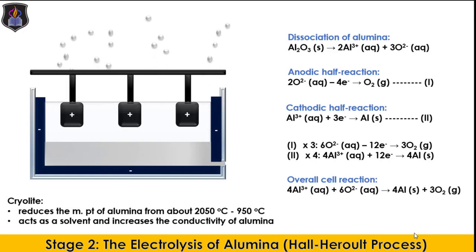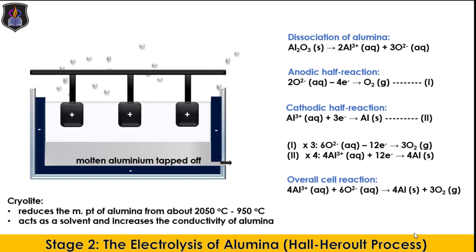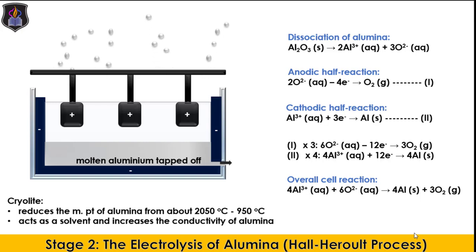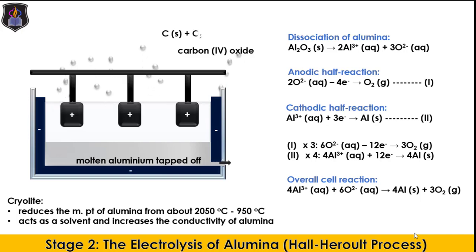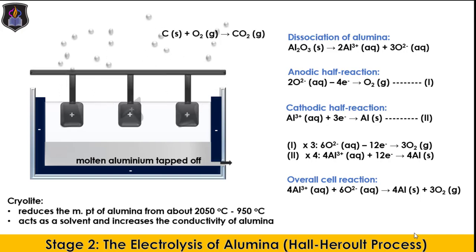After a while, the molten Aluminium is tapped off and poured into moulds and allowed to cool. Meanwhile, the oxygen gas liberated at the anode reacts with the carbon graphite anode to form carbon dioxide (CO₂), and after a period of time, the anode wears off and has to be replaced regularly.